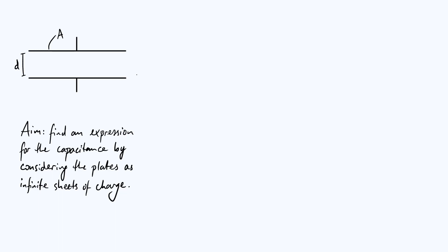Let's say there is a charge of Q on the lower plate — Q is going to be positive, so I'll write that as plus Q. The way a capacitor actually builds up its charge is that electrons are pushed onto one plate, and because of the electrostatic repulsion of those electrons, the electrons on the opposite plate are going to be pushed away. So if you build up a charge of plus Q on one plate, you must have built up a charge of minus Q on the other plate, because each electron will push one electron off the opposite side.